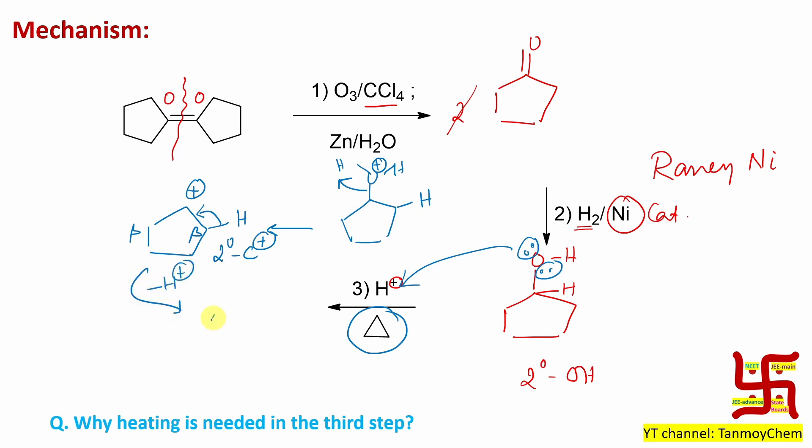And it will produce cyclopentene, alkene. And by the way, whatever acid from there, you can understand it is needed in catalytic amount. So this step is nothing but dehydration of alcohol, water removal. Means from here hydrogen and from here OH.